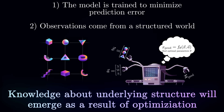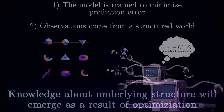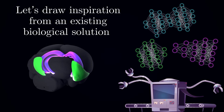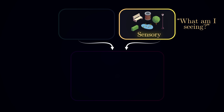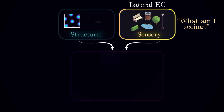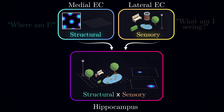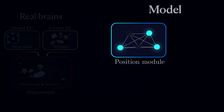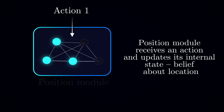But how should the model look? Because we are free to choose whichever architecture we want, it is reasonable to draw inspiration from an existing biological machine that solves this problem on a daily basis — the hippocampal formation. The hippocampus receives two streams of inputs: sensory, the what-am-I-seeing information, coming from the lateral entorhinal cortex, and structural, the where-am-I information, from the medial entorhinal cortex. They are then combined in the hippocampus into a conjoined representation. Similarly, our model will have an analogue of the medial entorhinal area responsible for keeping track of current location in the world. Let's call it a position module. At every point in time, it will receive an action and use it to compute the estimate of the current location — the best guess of where it is in space.